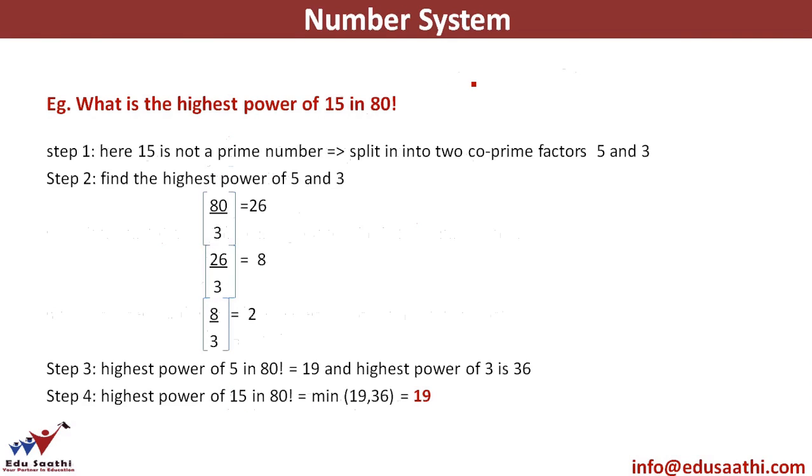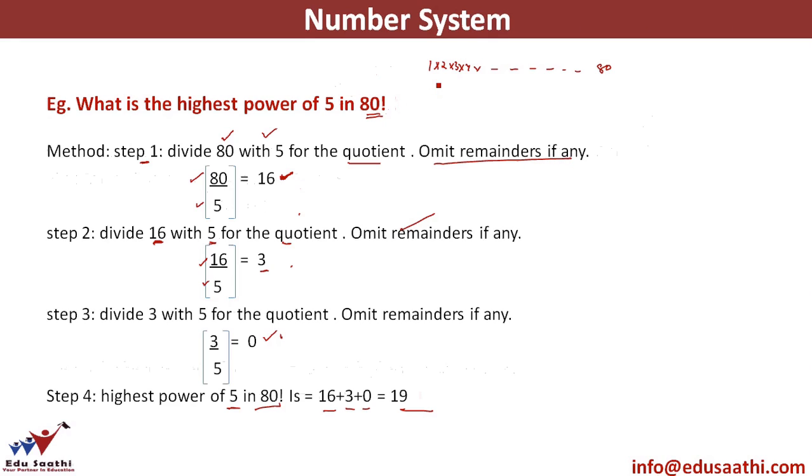Let us look at another question. The question is what is the highest power of 15 in 80 factorial? Now 15 is not a prime number. I will break 15 as 5 into 3. So I will split it into two co-prime factors, 5 and 3. Find out the highest power of 5 in 80 factorial which I have already done in the previous case which was coming out to be 19.